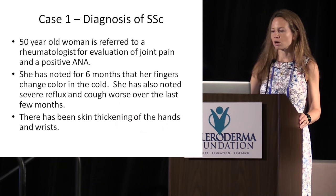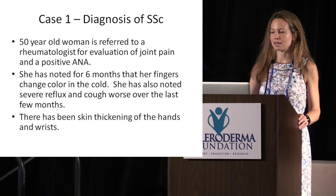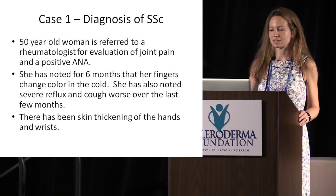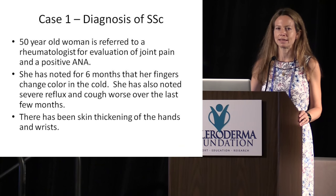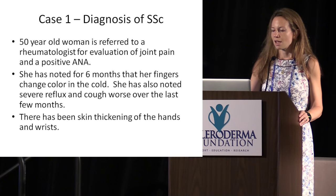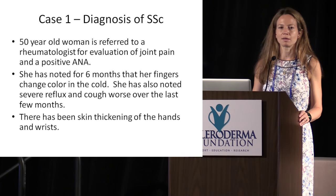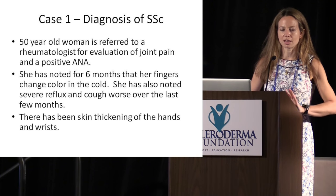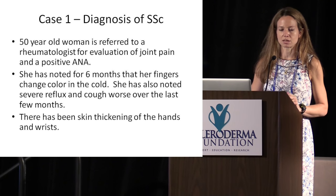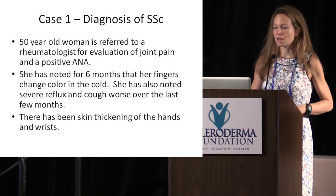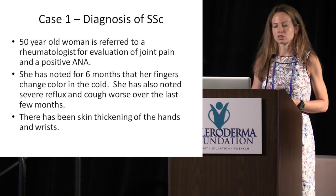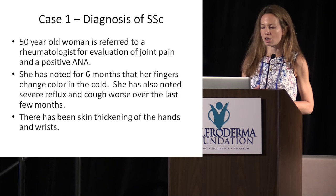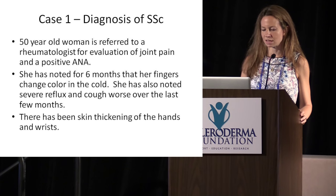I'm going to start with the first case, and this is a case with a new diagnosis of systemic sclerosis. A 50-year-old woman is referred to a rheumatologist for evaluation of joint pain and a positive ANA. She went to her primary care doctor with those complaints. They checked the ANA because of the joint pain and sent her on to the rheumatologist. She has noted for the last six months that her fingers changed color in the cold, and she's also had some reflux and cough.